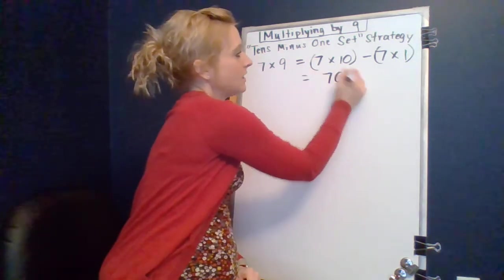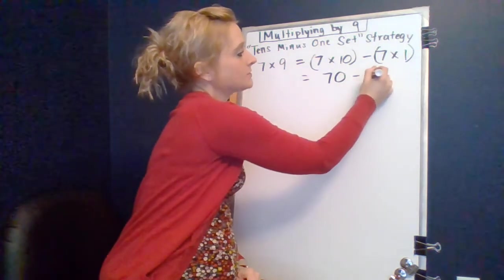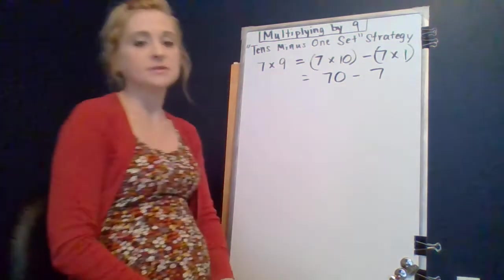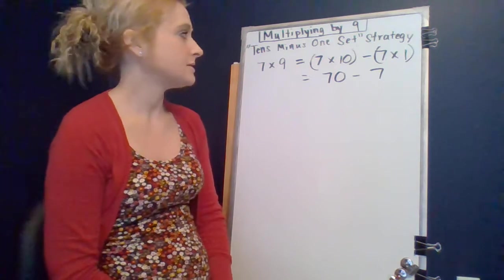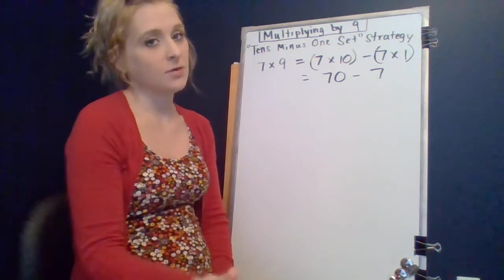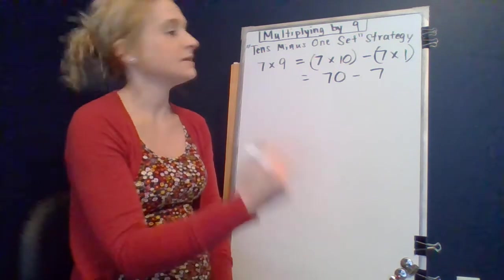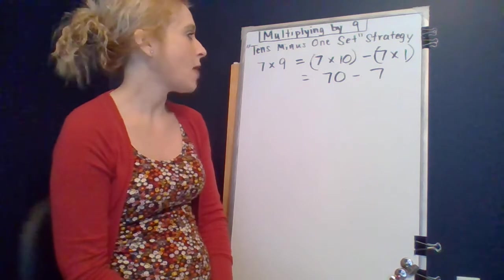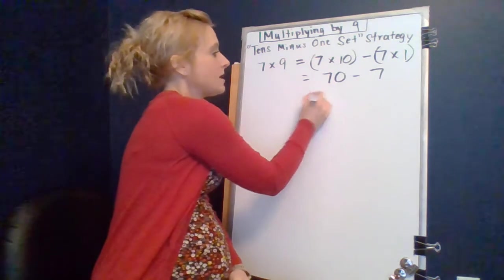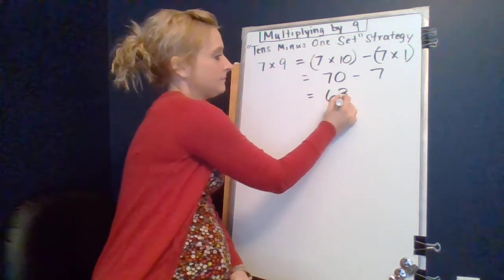So when we multiply seven times nine, we get seventy and then we're going to minus a set of seven. And so when we think about seventy minus seven, we're going to think about that number line and count back and you'll end up with sixty three.